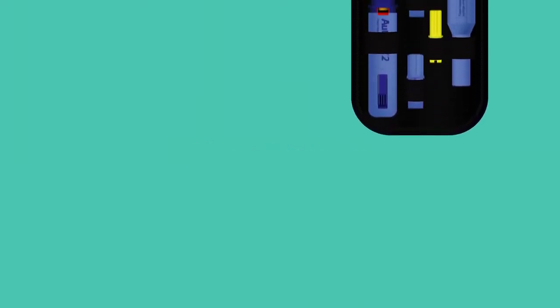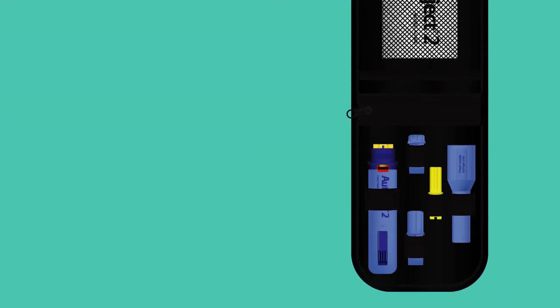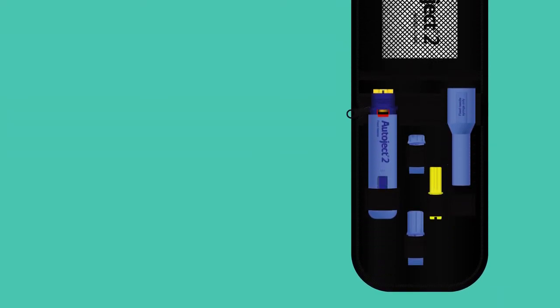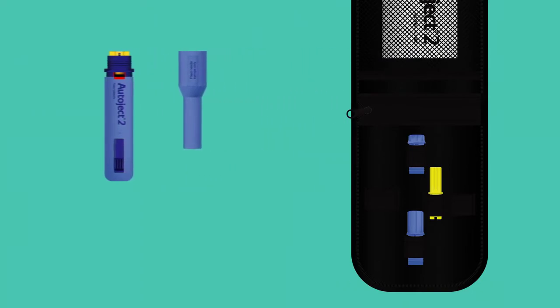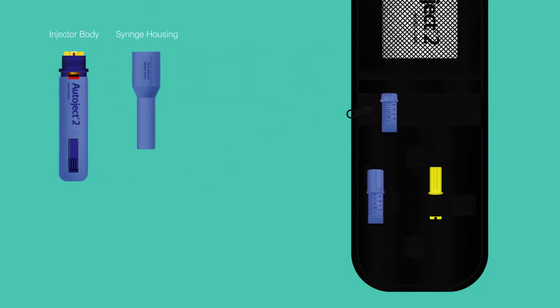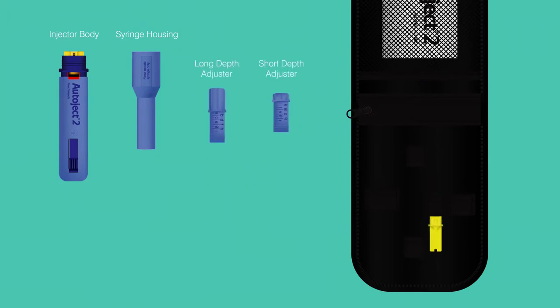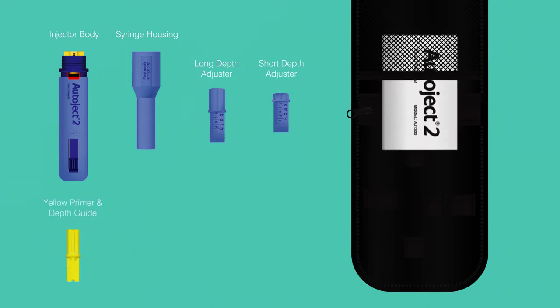Before you begin, familiarize yourself with the contents provided in your Autoject 2 kit. Each Autoject comes in a zippered pouch that includes one Autoject 2, either one removable needle or two fixed needle depth adjusters, a yellow primer depth guide, and the instructions for use.